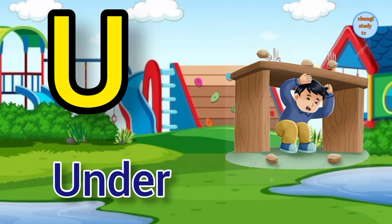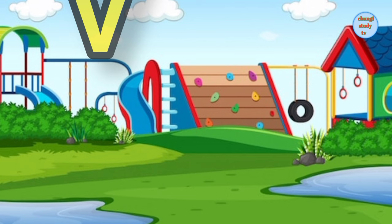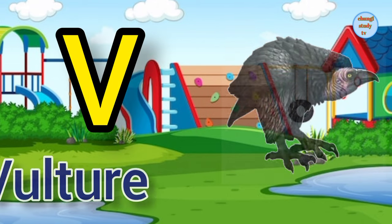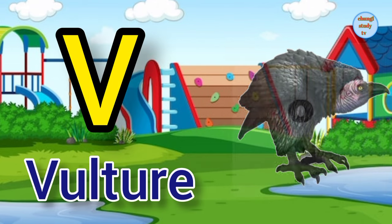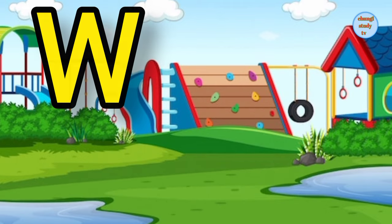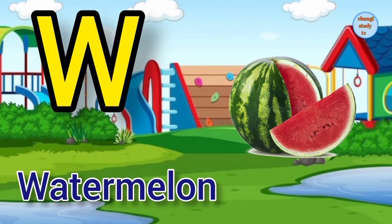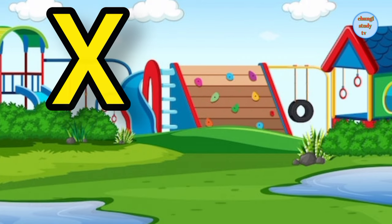U for under, under means neache. V for vulture, vulture means gid. W for watermelon, watermelon means carboose.